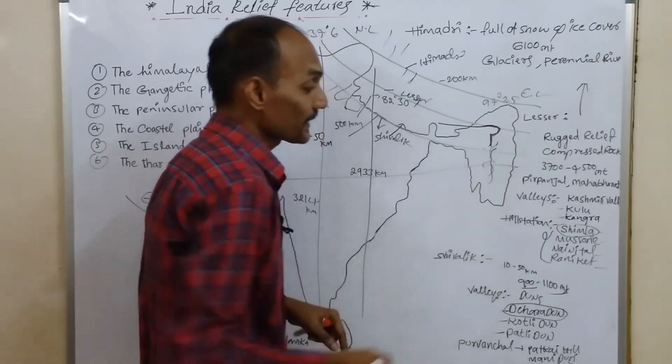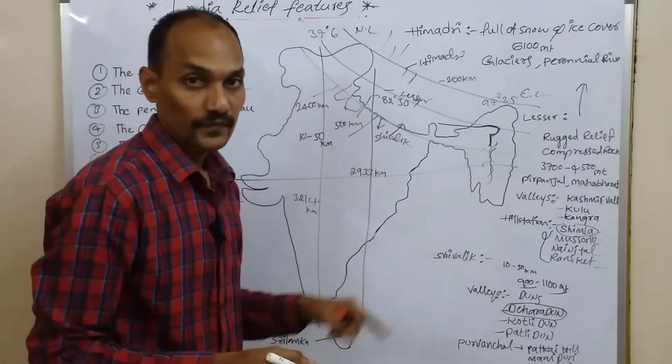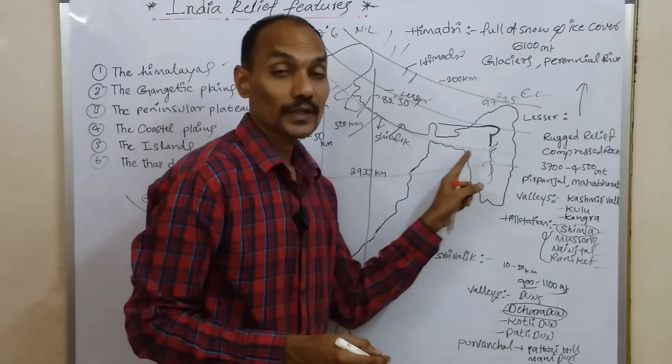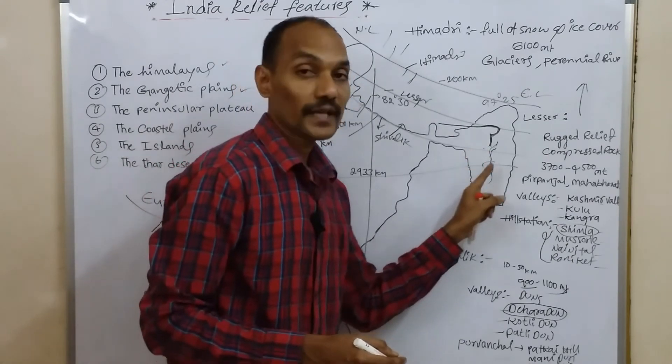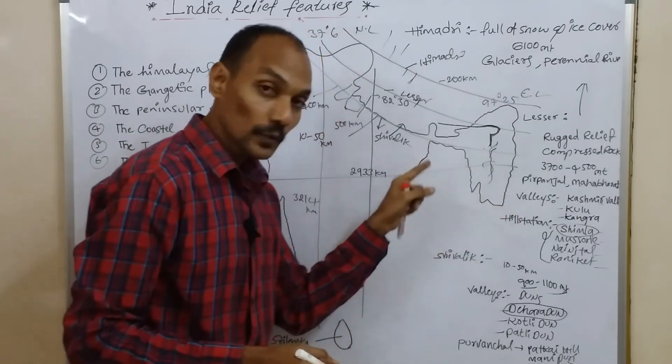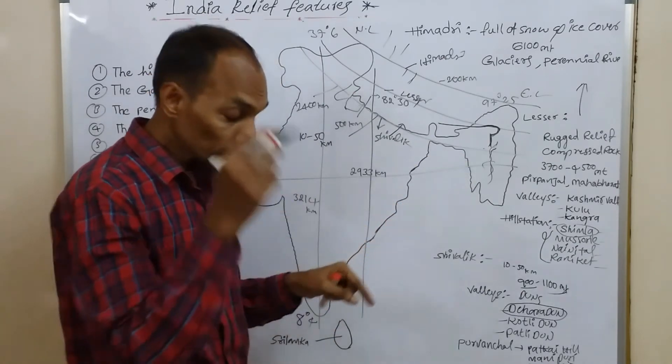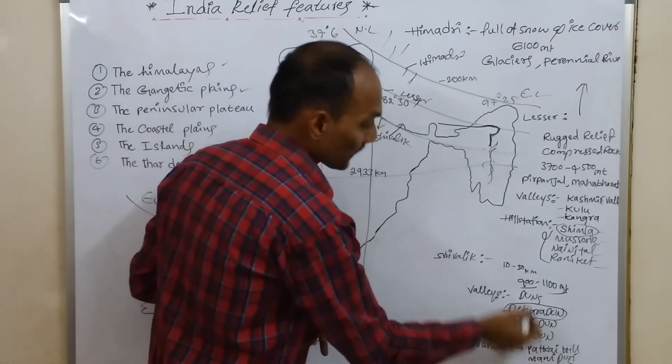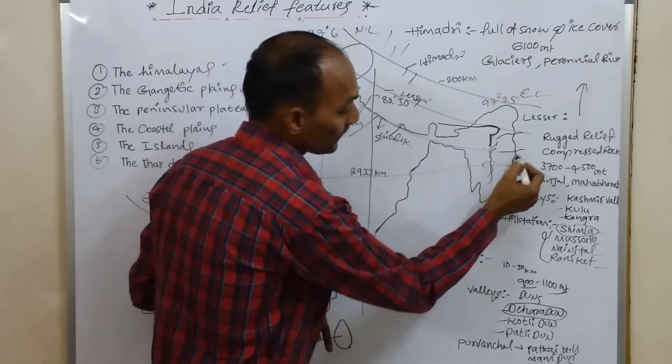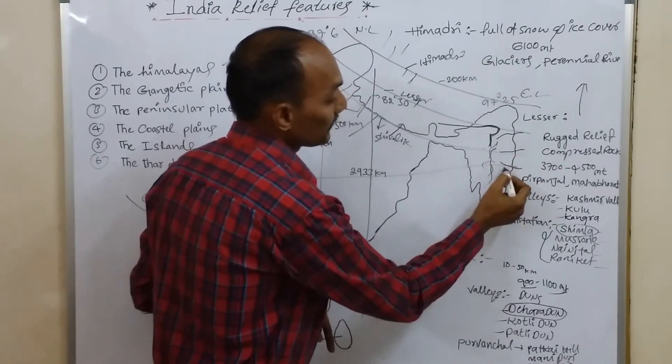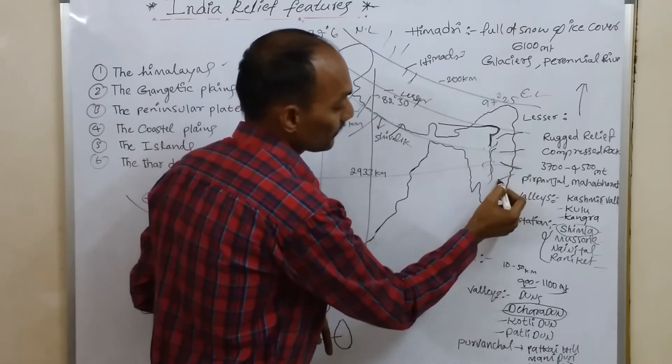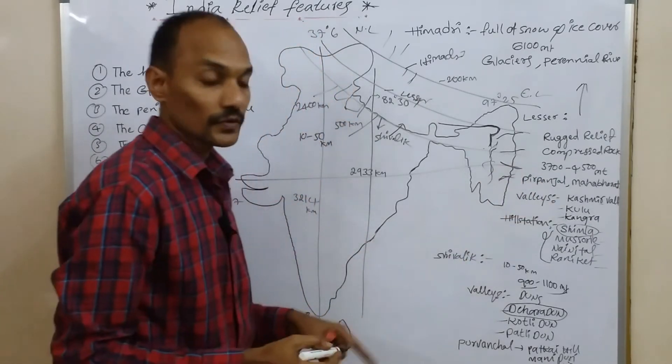This Purvanchal consists of sedimentary sandstones. These Purvanchal ranges are also called by different names in different regions. For example: Patkai Hills, Manipur Hills, Mizo Hills and Naga Hills. This is the information of Himadri, Lesser and Shivalik.